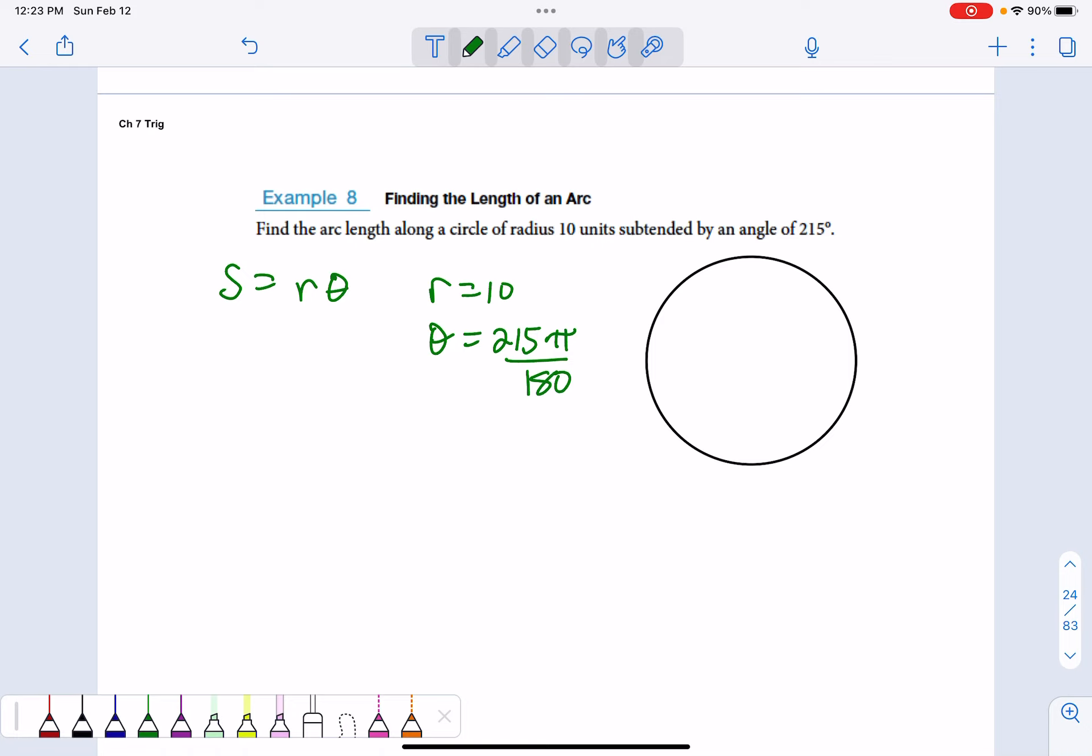We can reduce it now or later. I'm going to reduce it later. The arc length would be 10 times 215 pi over 180. Now since this is an actual length, let's go to the nearest tenth. We're going to use the pi button on our calculators to be more accurate. If we do 10 times 215 times pi divided by 180, that's approximately 37.5 units.